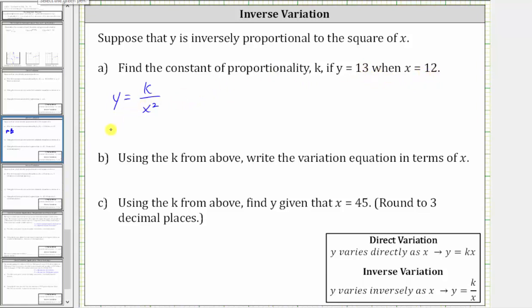Performing the substitution gives us 13 equals k divided by the square of 12. Well, we know the square of 12 is 144. So we have 13 equals k divided by 144.